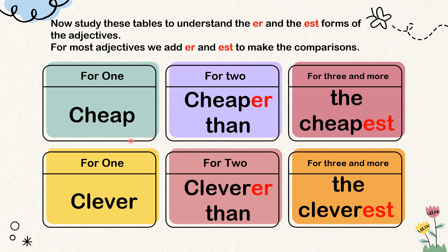Let's make a sentence with these words: cheap, cheaper than, the cheapest. Street food is cheap. Street food is cheaper than the restaurant. Street food is the cheapest.